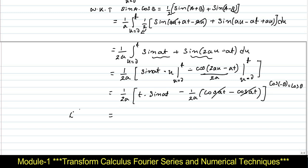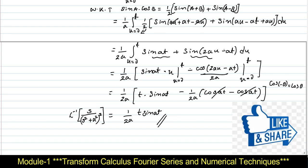Finally, L⁻¹ of s/(s² + a²)² is equal to t·sin(at)/(2a). This is the required solution for the inverse Laplace of s/(s² + a²)² using the convolution theorem. If you have any doubts regarding this problem, you can ask me in the comments. If you like this video, please subscribe to my channel and press the like button. Thank you all for watching!